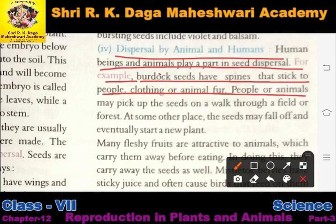For example, burdock seeds have spines that stick to people's clothing and animals' fur. Burdock seeds mein spines hote hain — matalab unme kaante hote hain — jo hamare kapdon ke saath ya animals ke fur ke saath chipak jate hain. Jaise jaise animal ek jagah se dusri jagah jata hai, seeds unke saath displaced ho jate hain.